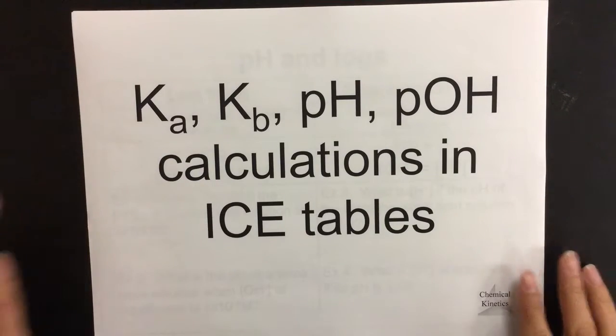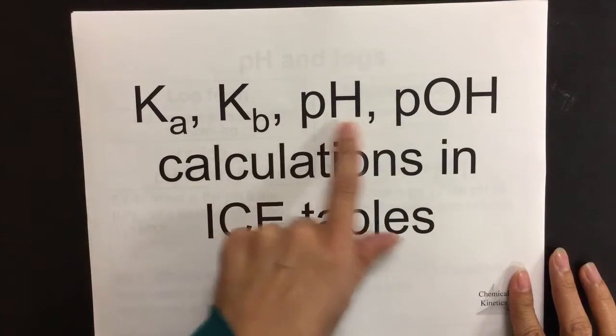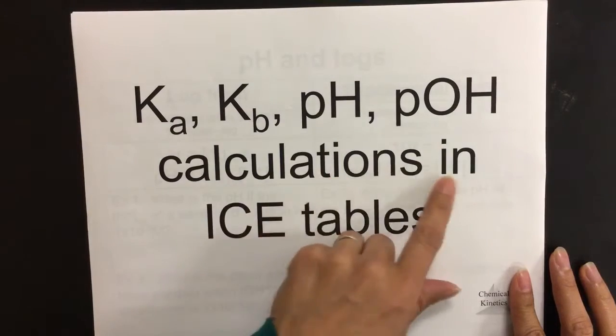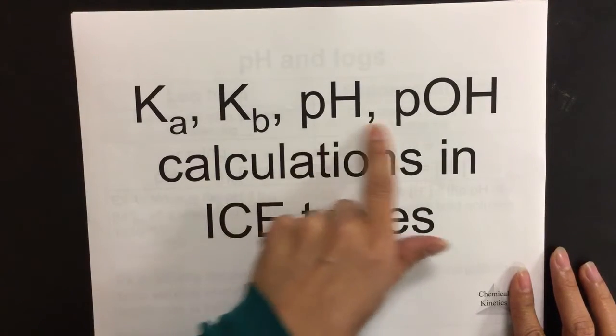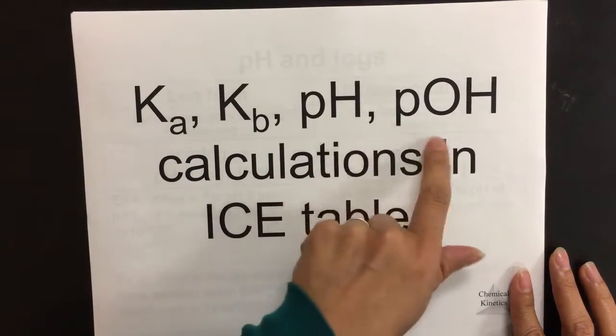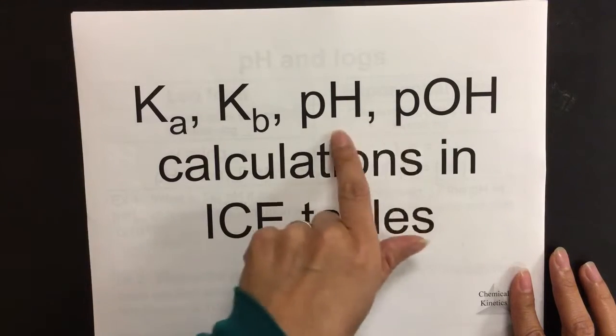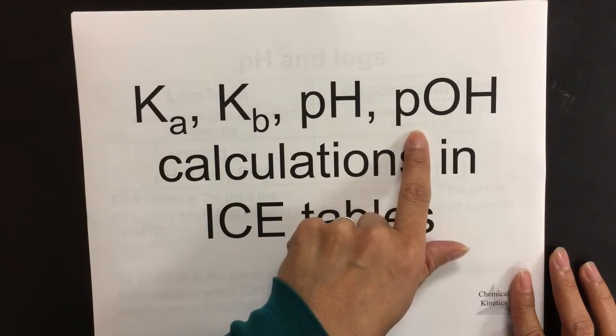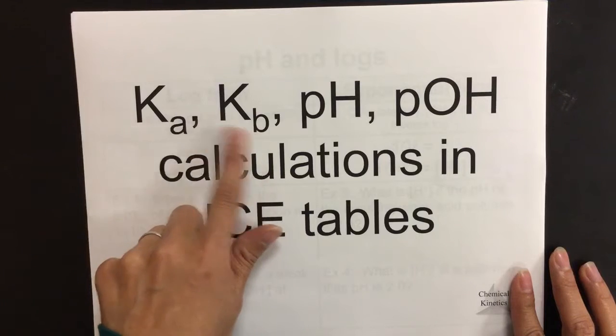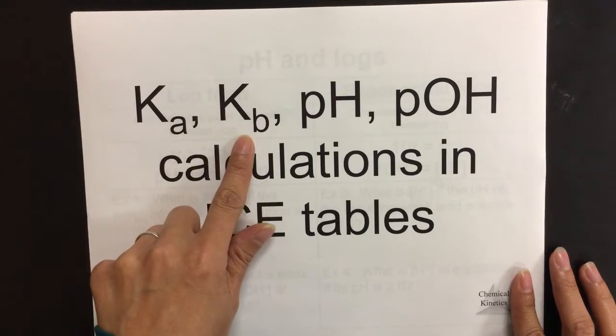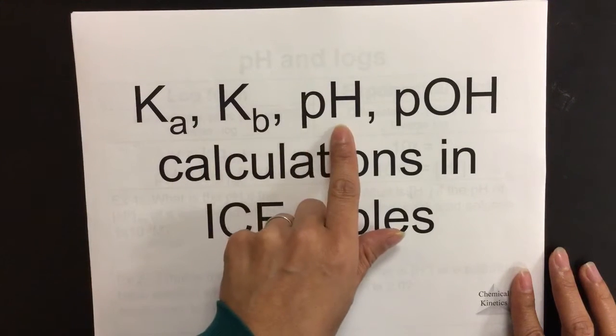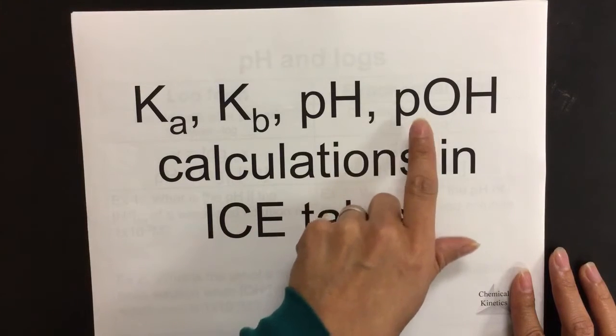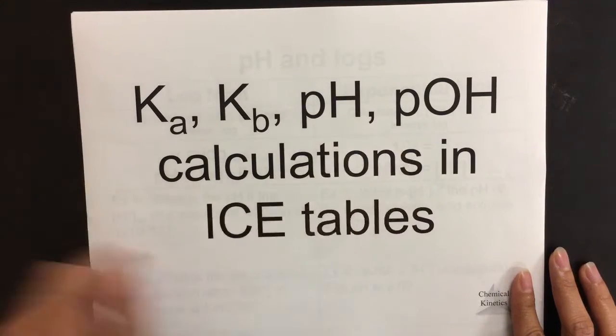Today's video is on Ka, Kb, pH, and pOH calculations in ICE tables. We're incorporating these two ideas added to this video from what we did last section. Last unit we were doing Ka and Kb calculations in ICE tables. This unit we're adding pH and pOH to that component.